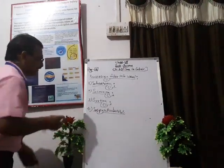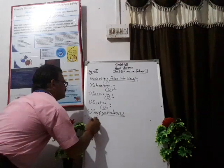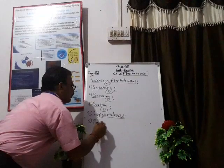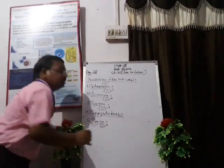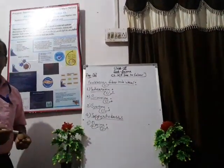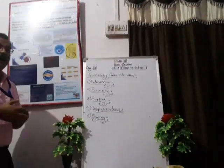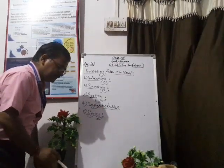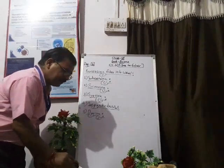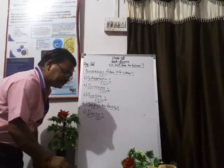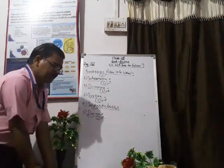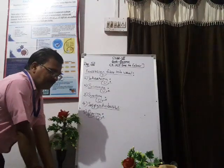The next step is dyeing. Dyeing means giving color to the wool. Naturally, wool can be black, brown, or white.